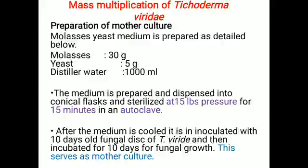We will discuss one interesting practical. The first practical is known as mass multiplication of Trichoderma viridi. Mass multiplication means we have to multiply the Trichoderma viridi fungus in mass quantity to meet the demand of farmers, because a number of biocontrol agents are available for control of plant diseases.